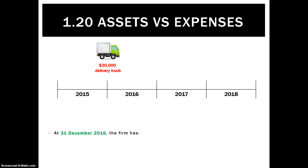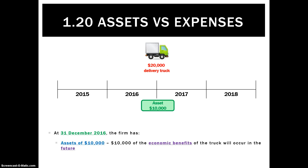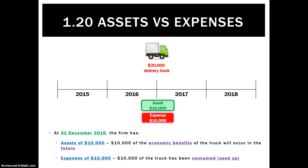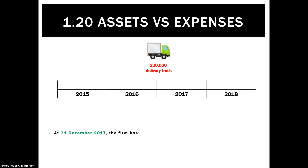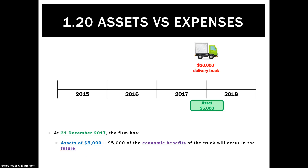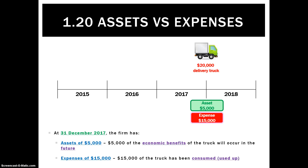A year later, we simply change the maths. The asset is now worth $10,000 — that's the economic benefits that will be consumed in the future — and the expense is $10,000, the amount we've used up. For the third year, we're left with a $5,000 asset and an expense of $15,000.